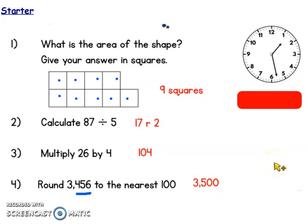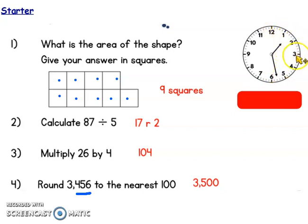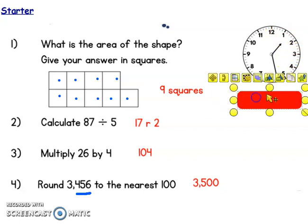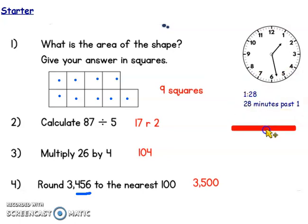Did you have a go at telling the time? This one was a little bit tricky today because the minutes hand isn't on the 5 or the 6 — it's in between. So it's gone 5, 10, 15, 20, 25, 26, 27, 28 minutes past 1. You could have also written that as a digital time or as numbers and words: 28 minutes past 1. Well done if you did spot that time.